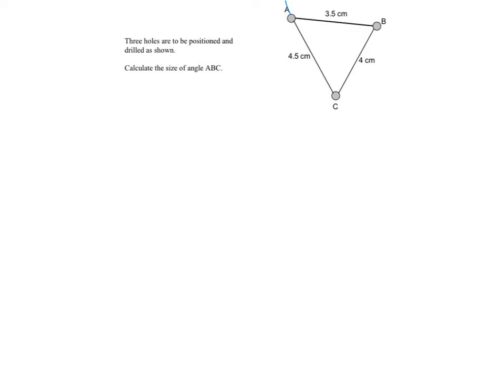So if I follow this, ABC means I'm finding this angle here. So I'm going to label all my sides. This is side A, this is side B, and that's side C.